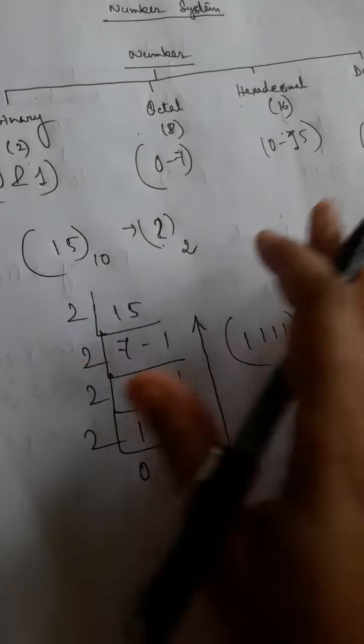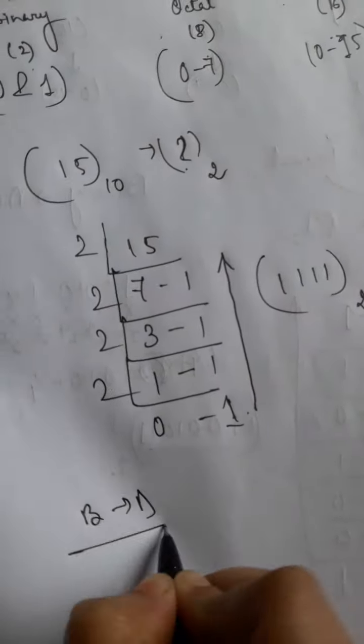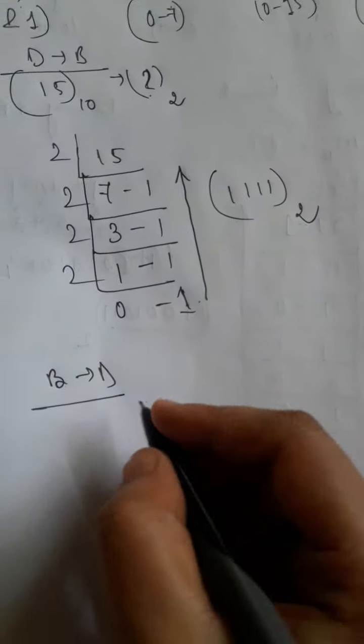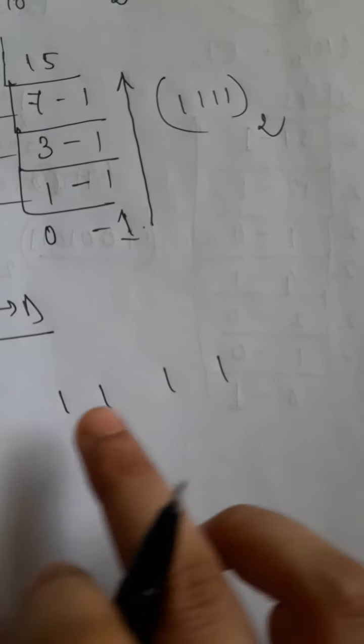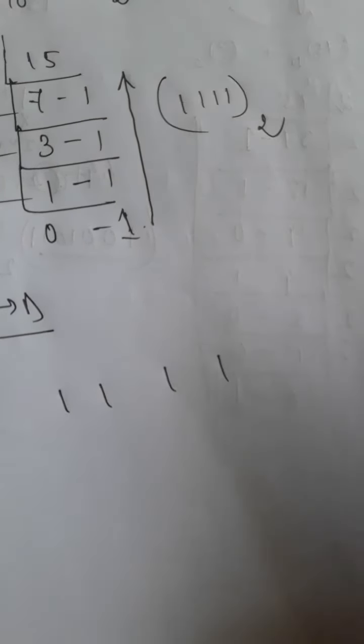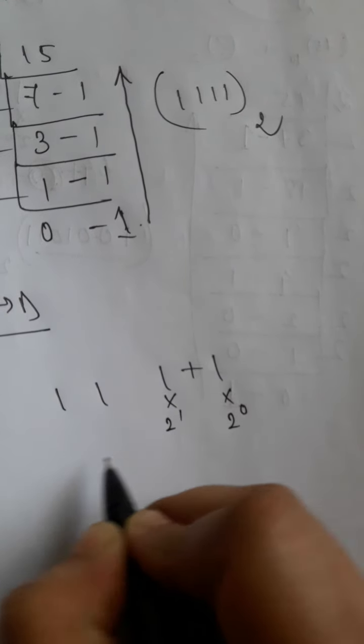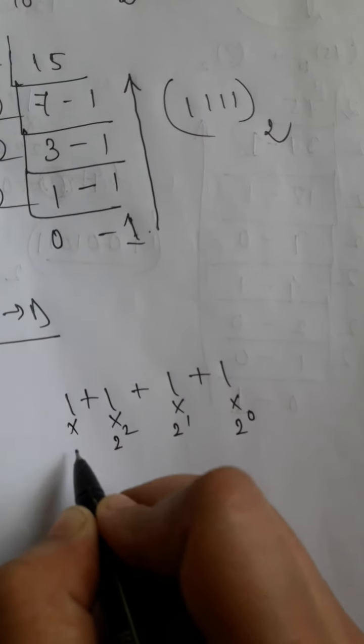Now if you are asked to convert binary to decimal, how will you convert? This is the conversion of decimal to binary. Suppose I want to see whether this is the binary equivalence of 15 or not. How will you find that? We have to multiply each digit of the binary number with the power of 2 starting from right to left. 1 into 2 to the power 0 plus 1 into 2 to the power 1 plus 1 into 2 square plus 1 into 2 cube.